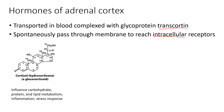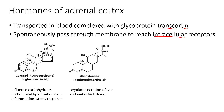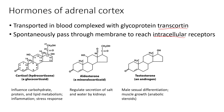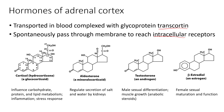Let's go over the steroid hormones produced in the adrenal cortex. First, cortisol — also called hydrocortisone — is a glucocorticoid that influences carbohydrate, protein, and lipid metabolism, as well as inflammation and the stress response. Aldosterone is a mineralocorticoid involved in the regulation of salt and water secretion by the kidneys. Testosterone is an androgen and beta-estradiol is an estrogen; both are involved in sexual differentiation, maturation, and function.